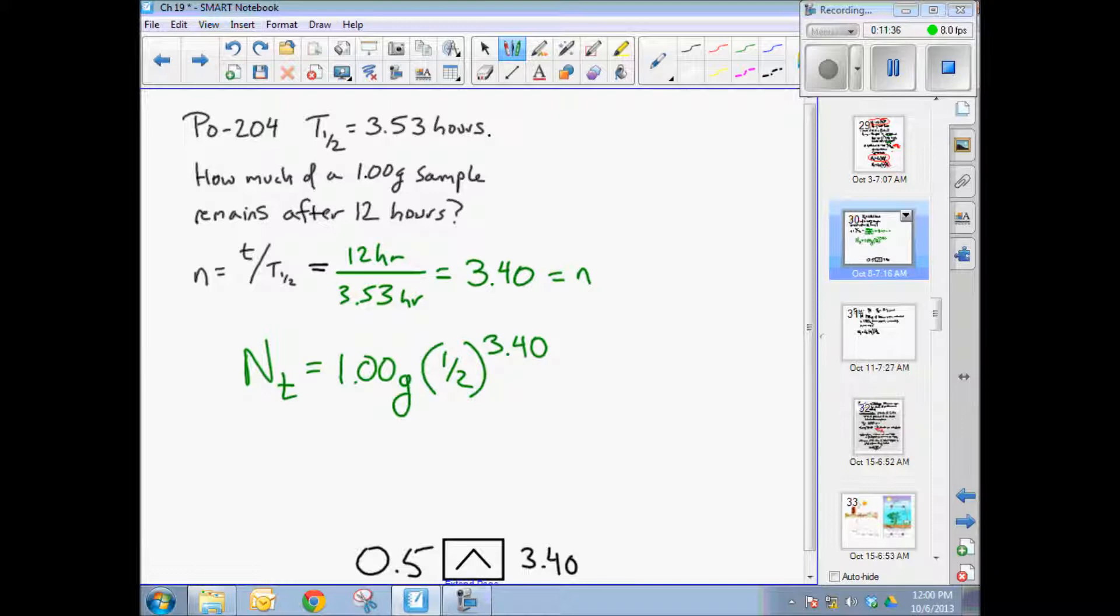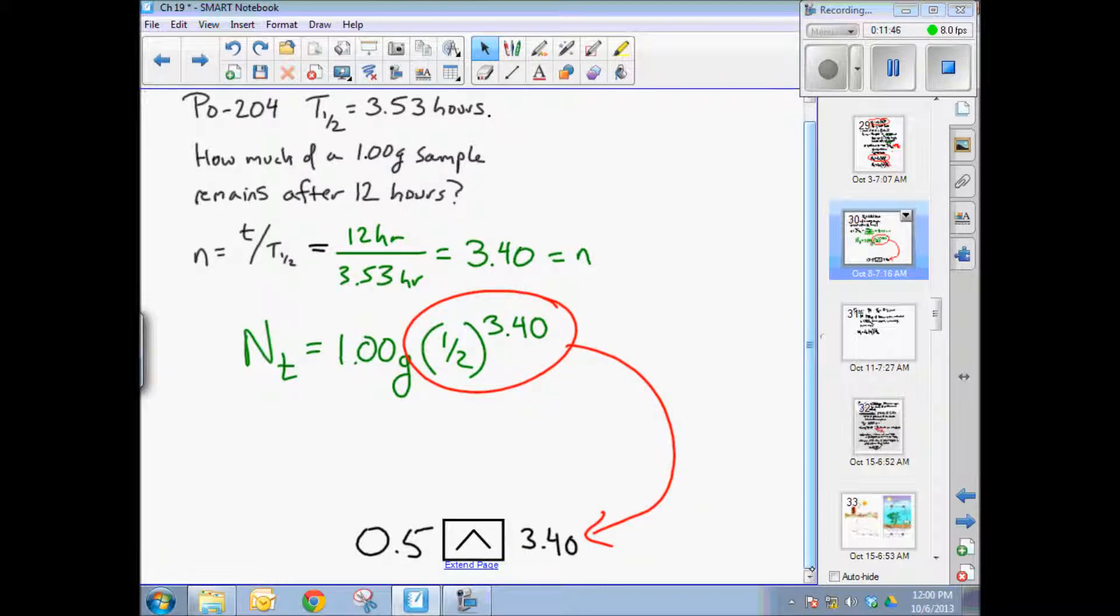Now, if you don't know how to plug this operation into your calculator right here, one half to the 3.4, it looks like this. There's a small button on your calculator. That's the carrot. It's 0.5 carrot 3.4, and then multiply that by one, which you don't really need to do because you get your answer. And the answer is 0.095 grams. That's the final answer.